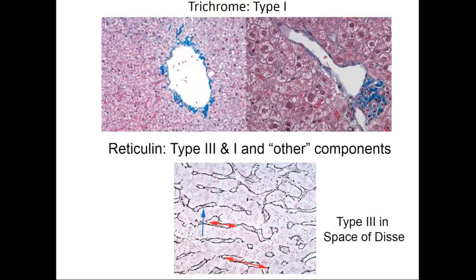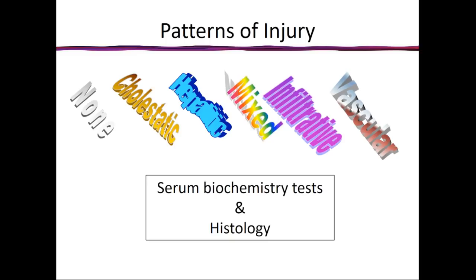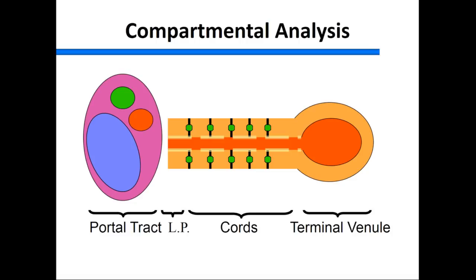We'll now start to perturb each of these components and see what happens. Patterns of injury include no injury, cholestatic, hepatitic, mixed, and infiltrative or vascular types of injury. I'll show you how we derive these from both histology and the liver-associated enzyme profile, using our compartmental analysis. Now we'll do case 2: a 62-year-old woman who underwent a liver transplant for cirrhosis secondary to hepatitis C.